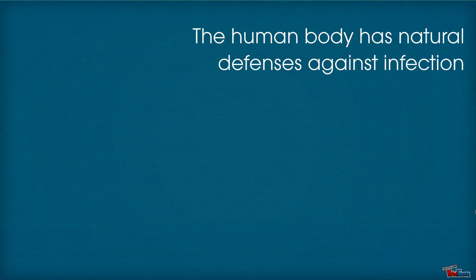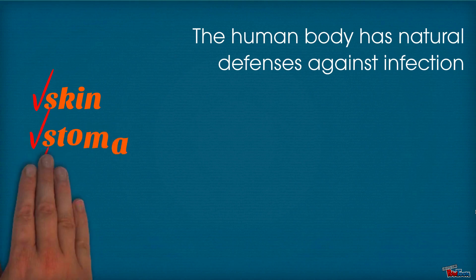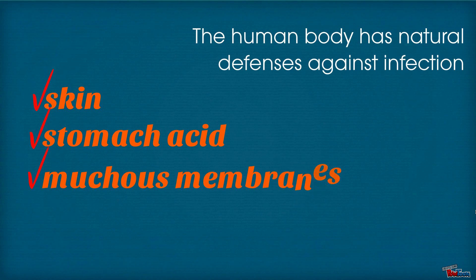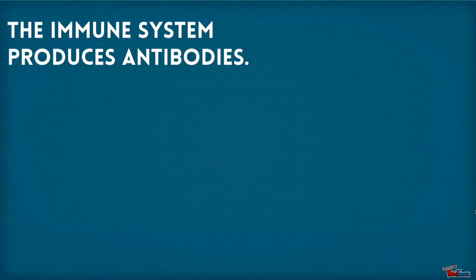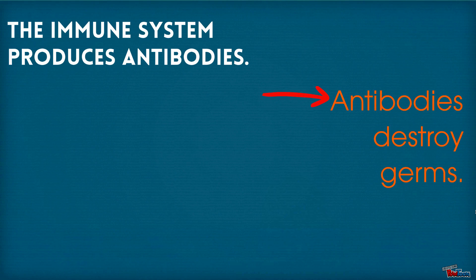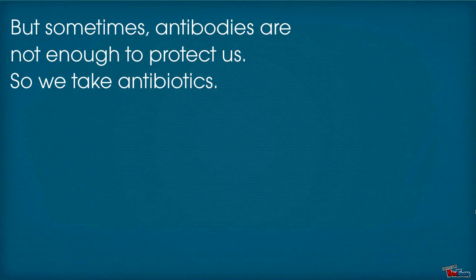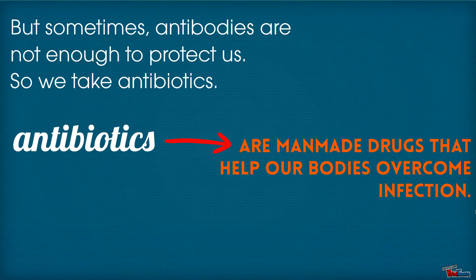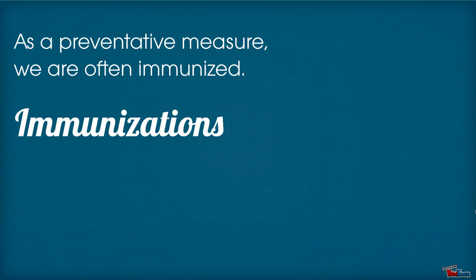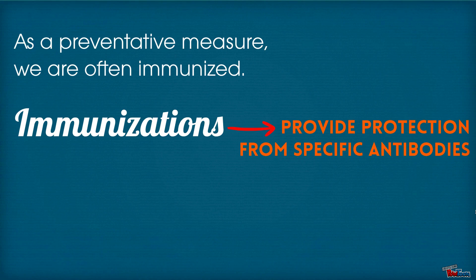The human body has natural defenses against infection, like our skin, stomach acid, and mucous membranes. Inside our bodies, germs are combated by our immune system. The immune system produces antibodies, which destroy germs. But sometimes antibodies are not enough to protect us, so we take antibiotics — man-made drugs that help our bodies overcome infection. As a preventative measure, we are often immunized. Immunizations provide protection from specific antibodies.